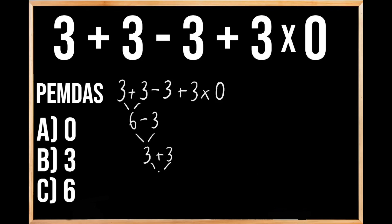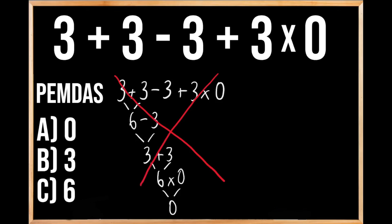That gives us 6, and then they're going to multiply that 6 by 0, which gives us 0 for an answer of A, 0. But if we solve this problem in this way, we're going to get the incorrect answer because we didn't follow the order of operations.